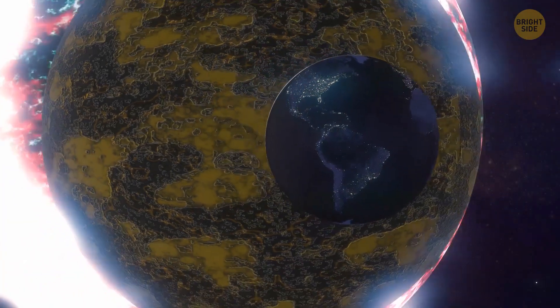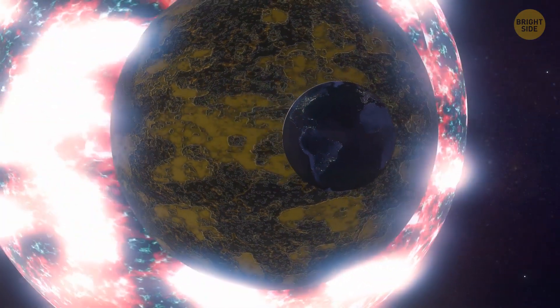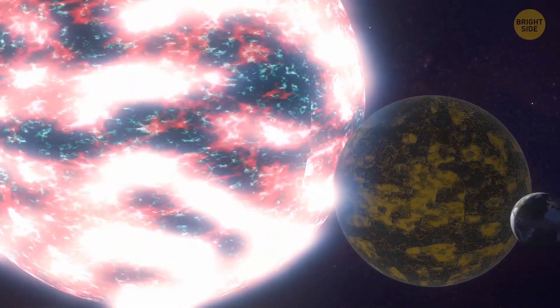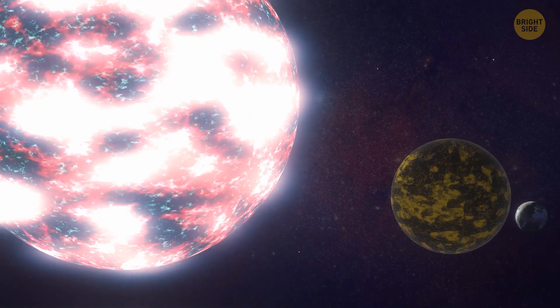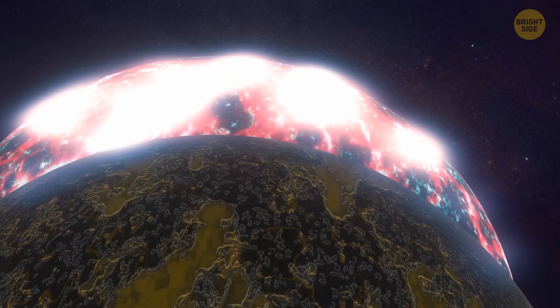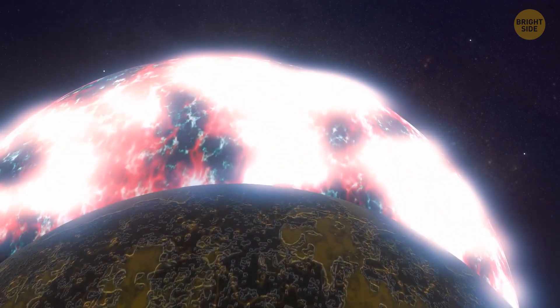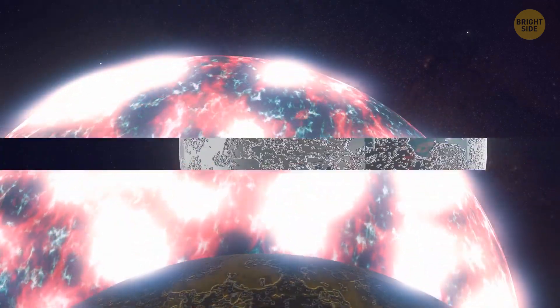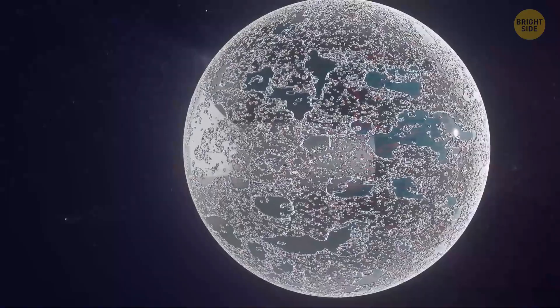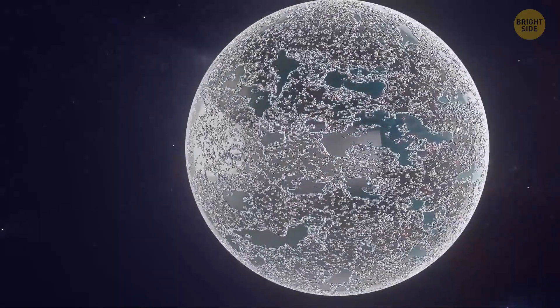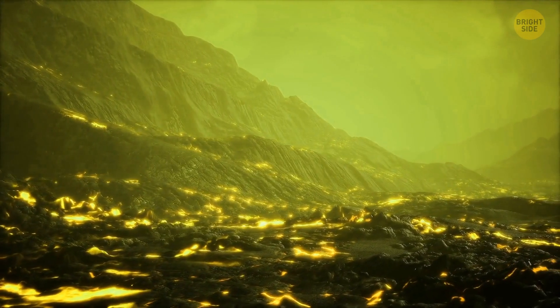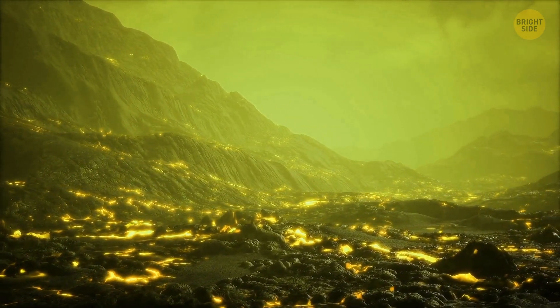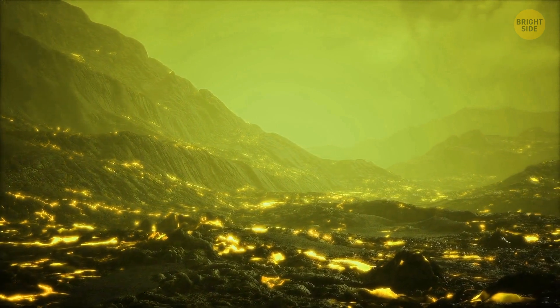This planet's size also surprised scientists. It's way bigger than Earth. Other planets this close to their stars are either much bigger gas giants or small, rocky planets. This planet is a smaller gas giant, and scientists didn't expect it to exist so close to its star. This is the shiniest planet ever found, even shinier than Venus. But despite its cool appearance, it's probably not a friendly place for life because of its extreme temperatures and strange metallic rain.